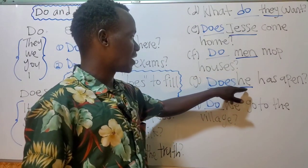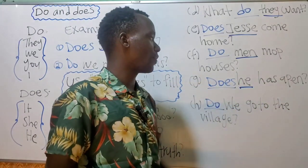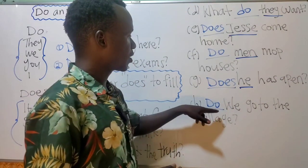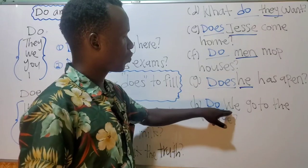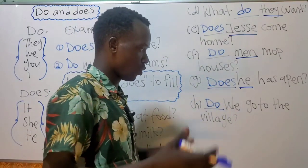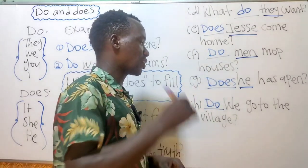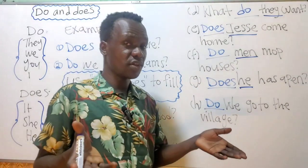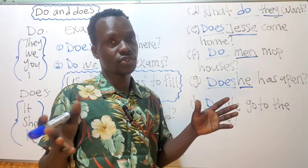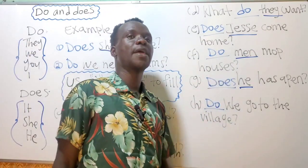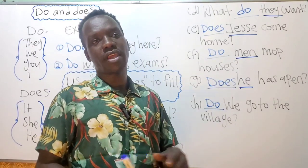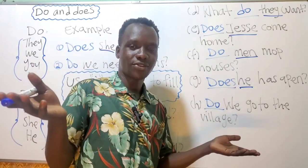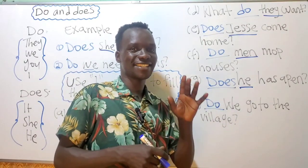Next: 'Does he have a pen?' — 'he' is one boy, so it takes 'does.' And: 'Do we go to the village?' — 'we' is plural, so it takes 'do.' This is a question. If you understood, please subscribe, like, share, and comment below — I will read and reply. I would like to stop here for today's class. I will see you in the next class. Ciao!